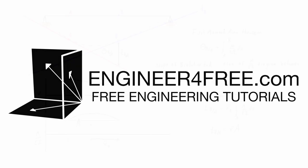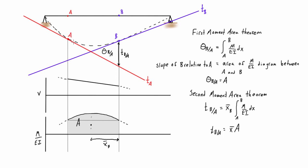Welcome back. This is where we left off in the last video where I introduced the moment area method. Quick recap: you have a loaded structure, usually a beam. It has a deflected shape and we pick two points of interest to find the relative slope between them. You draw the M over EI diagram, which is just the bending moment diagram divided by the flexural rigidity, and that value corresponds to the difference in angles between the two tangent lines in radians.